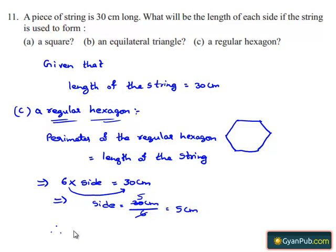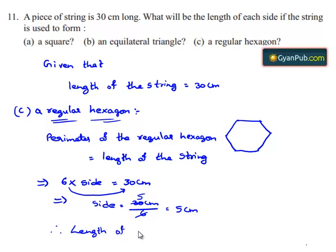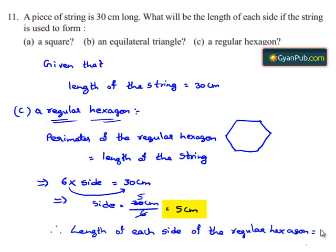Therefore, the length of each side of the regular hexagon is equal to 5 cm.